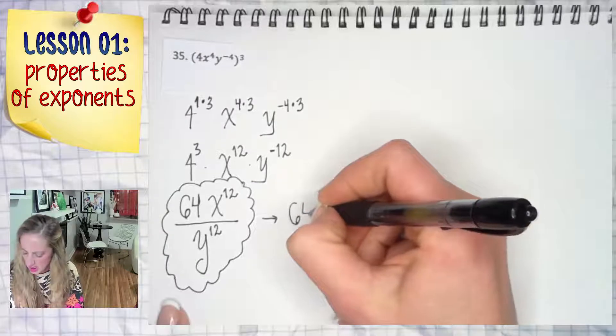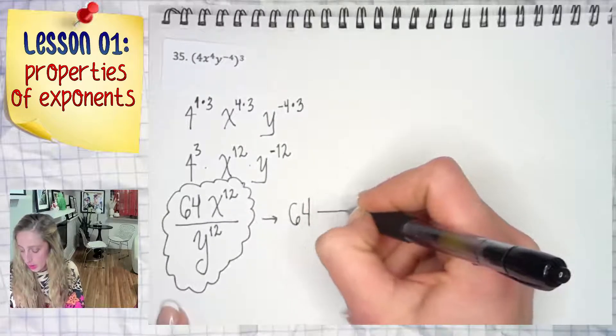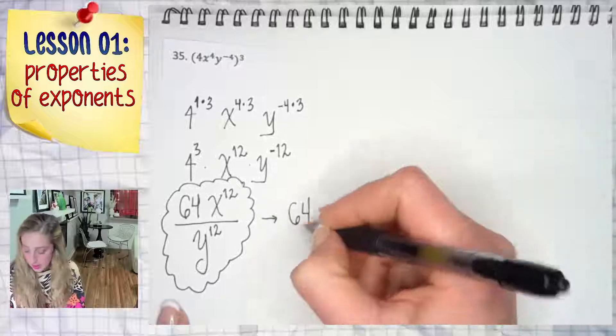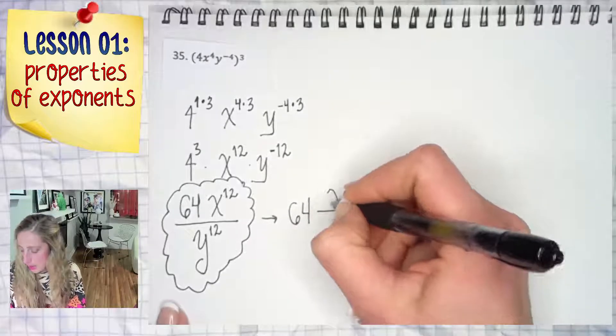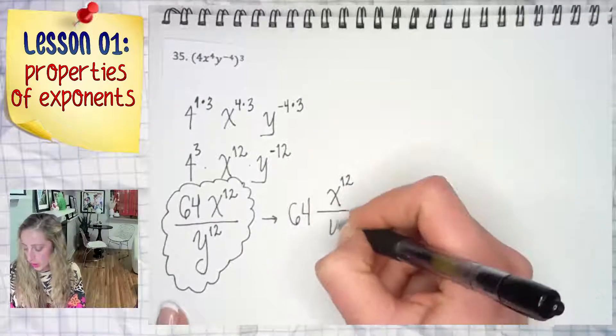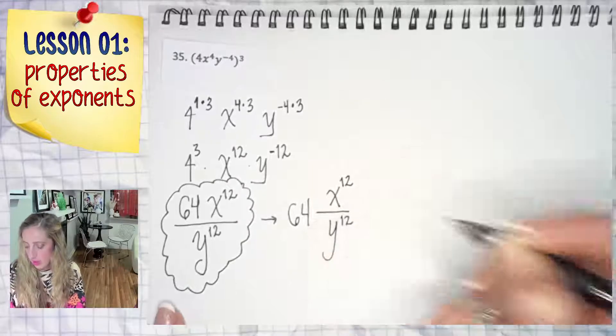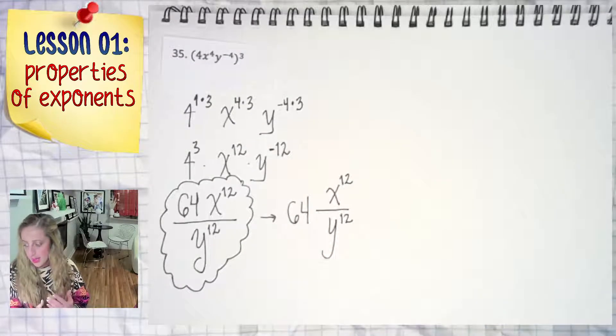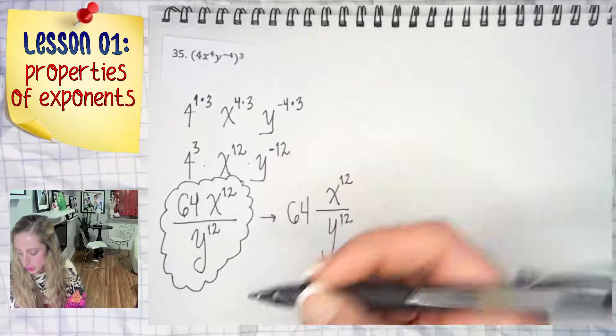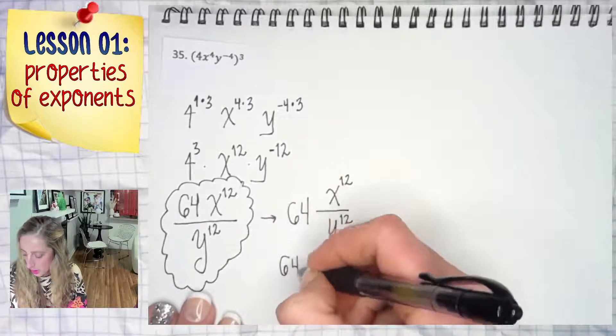Another way to write this answer could also be, just to kind of toss that in there because I think people get a little weird with that, it's 64 times x to the 12th over y to the 12th. Of course, we could implement parentheses again and just put x over y all to the 12th. I mean, that's just another way to write the same answer.